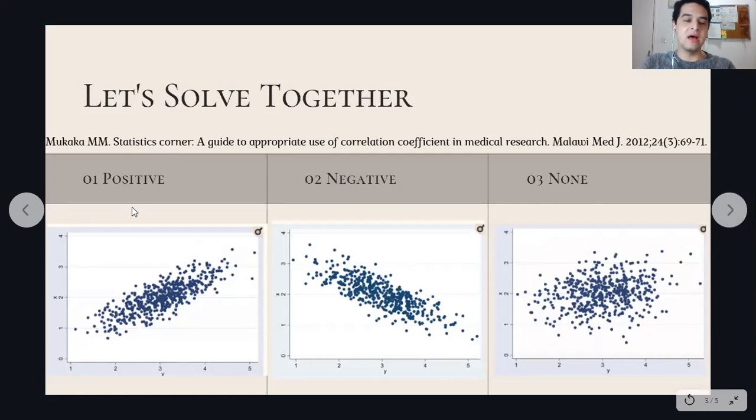Here, when we have a positive correlation, we have an ascending line. While negative is a descending line, and none means the points are dispersed or spread. The more aligned the points are together in the scatter plot, the stronger the correlation is. And this goes for both positive and negative.